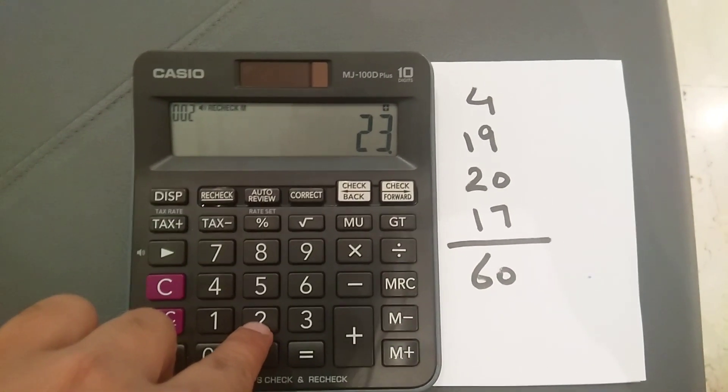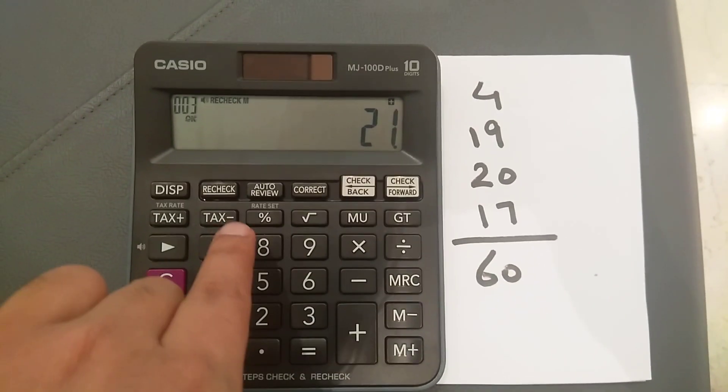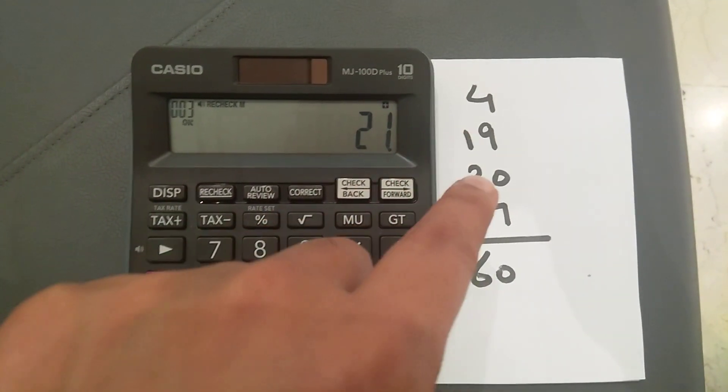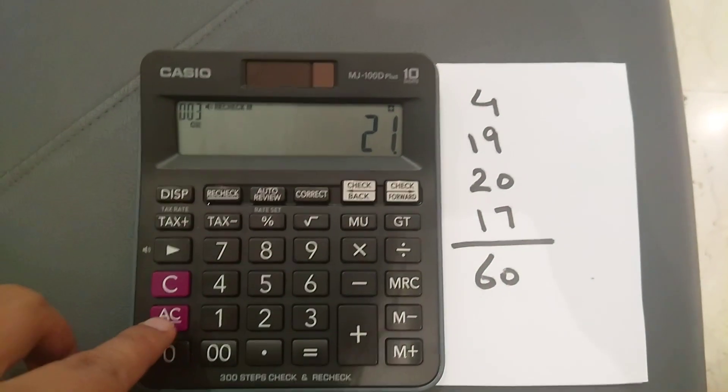It stops me there. It means it's showing I made a mistake on this number, so that's not the correct number. I will show you again how you can do it. I press ON again. For example, let's say we have the same numbers.